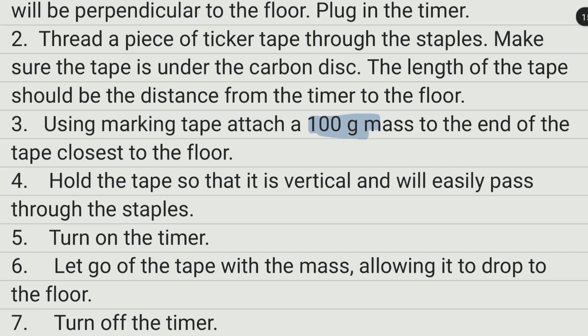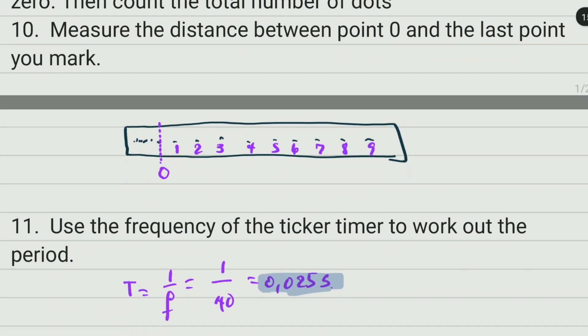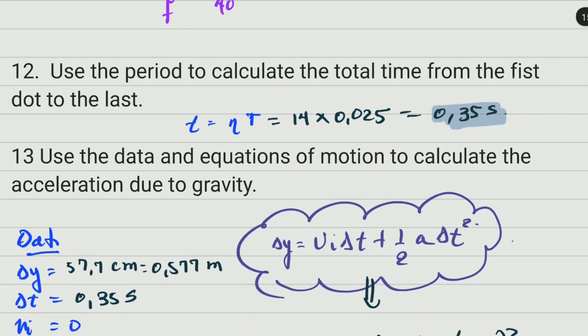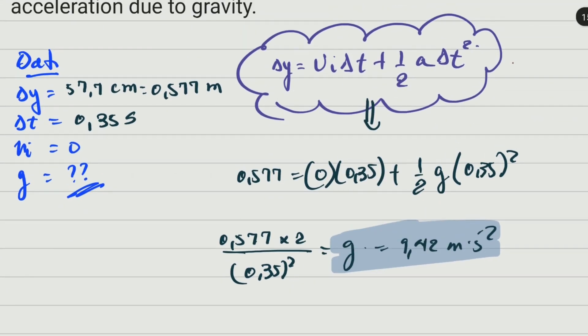However, remember 9.8 is not an exact number; it's an average given for the acceleration due to gravity because it changes according to the place, area density, and other factors. Thank you for watching. I'll see you next time. Subscribe to the channel. Mr. G here.